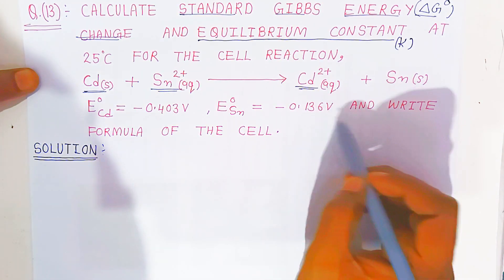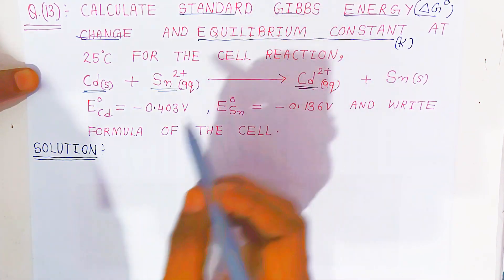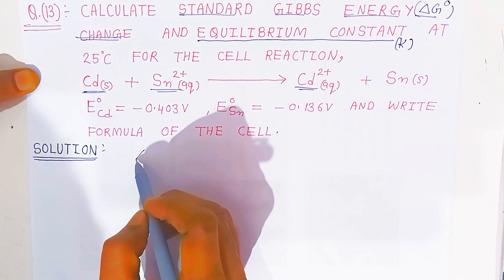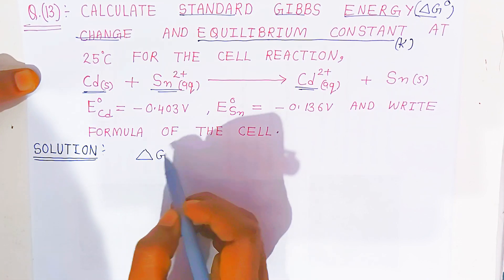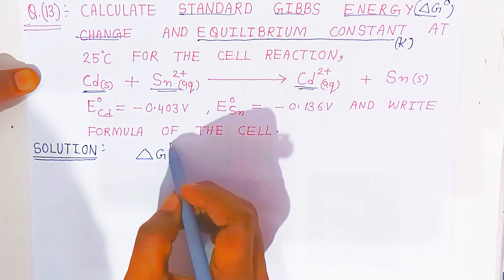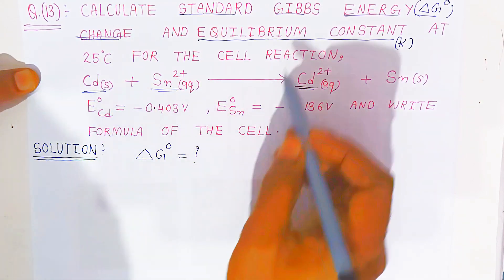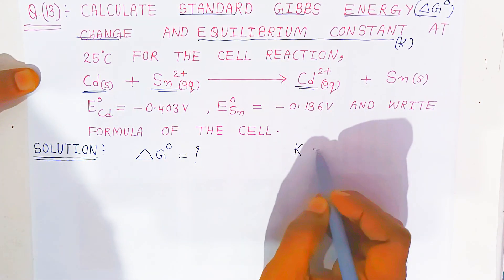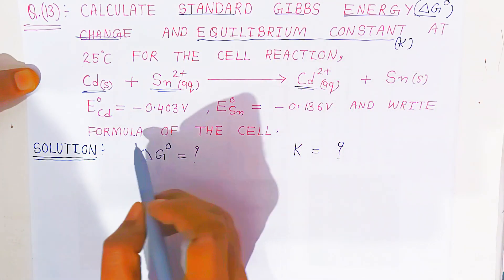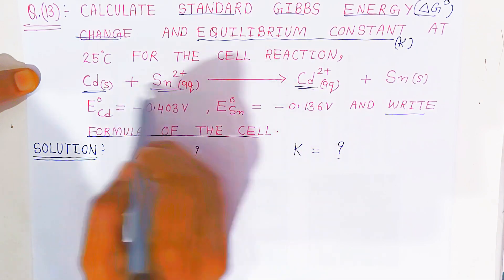With the help of these given values, students, you have to write the formula of the cell. We will first write the cell notation, then calculate the standard Gibbs energy and the equilibrium constant capital K.